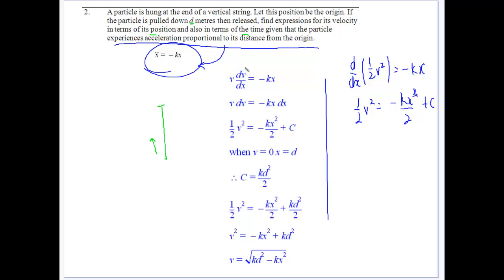So we separate and put our dx over there. We get v dv is equal to minus kx dx. Basically we're going to integrate both sides with respect to their variables. So v dv gives us half v squared, which we see there. And minus kx dx gives us minus kx squared over 2. We've got a constant, and we know it was pulled down, so it started at rest there, and x was equal to d. So c ends up being kd squared over 2.